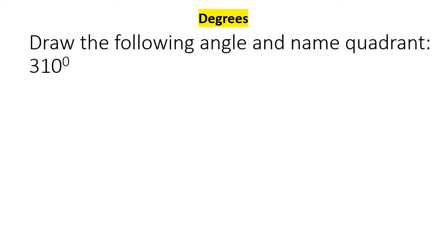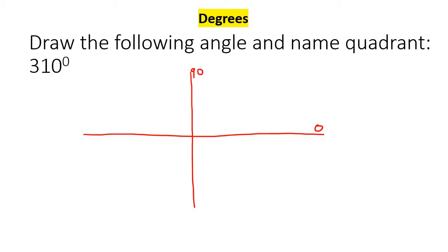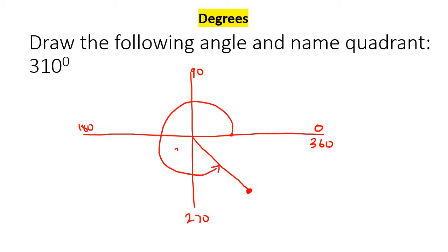Here's the next example: 310. So you can draw your x and your y-axis. Remember that this is 0, 90, 180, 270, and 360. So 310 would be somewhere in this quadrant, probably a little bit closer to the 270, so about there. Then you draw a little line and show the angle going all the way around, so that would be 310. This is your terminal, and this is the initial side. In future lessons, we're going to speak about reference angles and do this in radians.